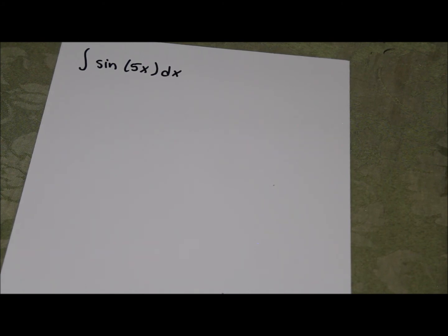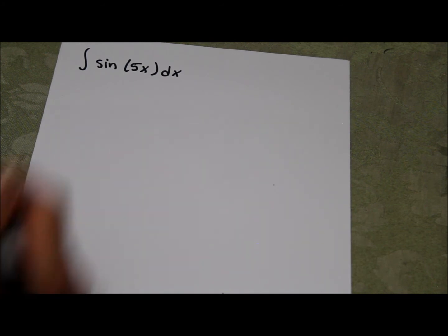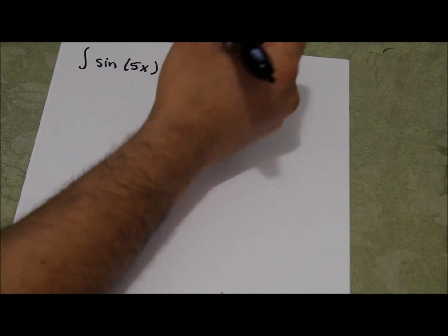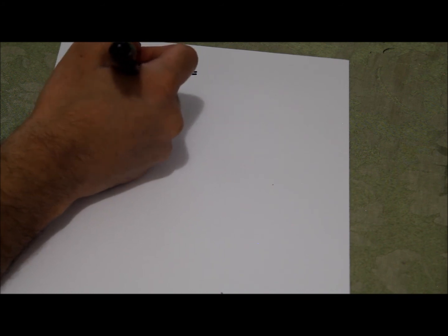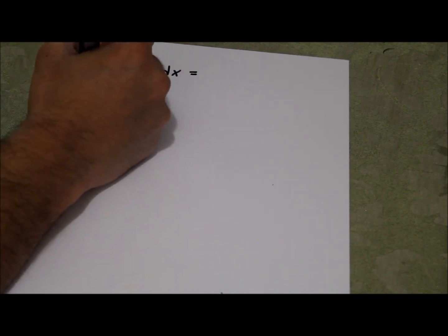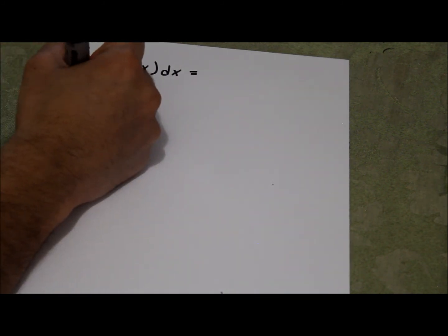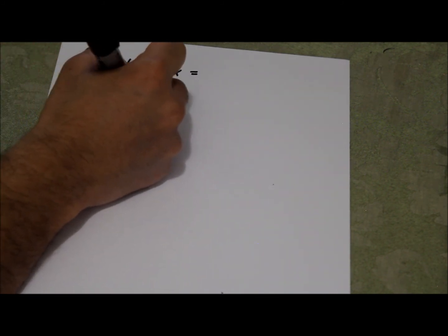That integral of sine x, the integral of cosine x, the properties of integrals, those types of things help to just have memorized. So since we have 5x inside the parentheses, what we want to do is set u equal to 5x. And then du is equal to 5 dx.